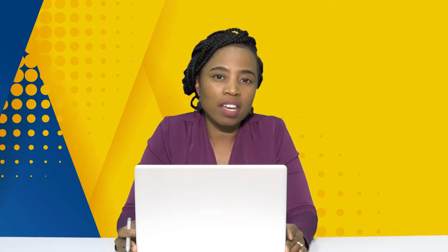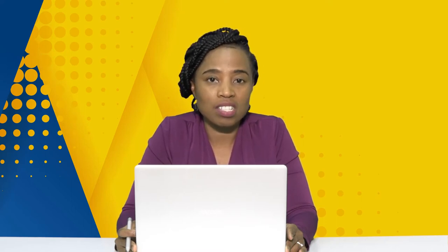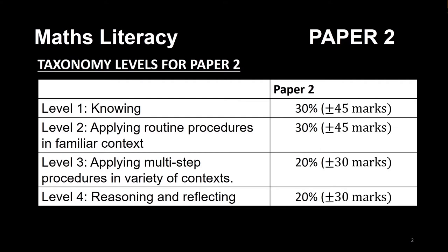I hope you have your pen, your paper, your ruler, and also your calculator so that you can follow through as I continue on the screen. Just as a reminder of the levels, we've got level one to four. Level one and two have about 45 marks each — roughly 90 marks total for the easier questions. For those of us who are struggling with measurements, we can really capitalize on these easy questions and pass our paper.